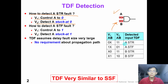If we want to detect A slow-to-rise fault, in the first vector V1, A is controlled to 0. In the second vector, we launch a rising transition on A. At the same time, B must be 1, so that A stuck-at-0 fault can be detected.